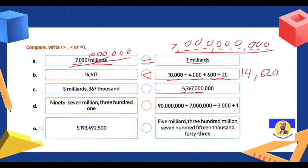Letter C: thousands, millions, milliards — five million at the same as five million; 367 thousand here but 367 million there — so 367 million is the greatest. Next: 97 million at the same as 97 million; 301 here but 3,001 there — so 3,000 is the greatest.